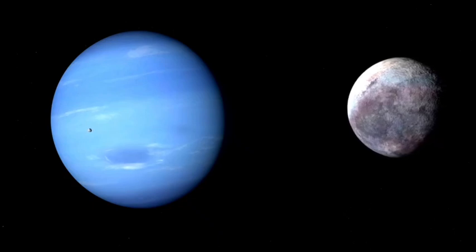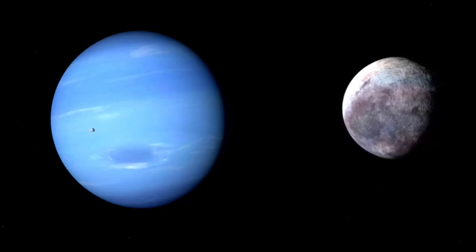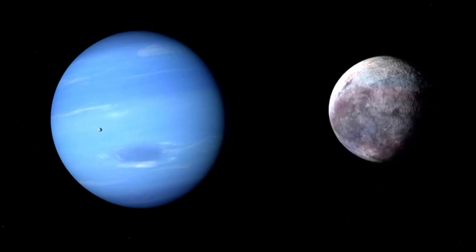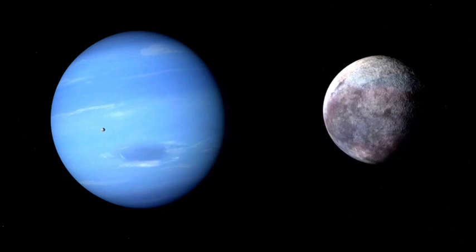Neptune has 14 confirmed moons. The largest moon of this planet is Triton, which rotates in the opposite direction to the spin of Neptune.